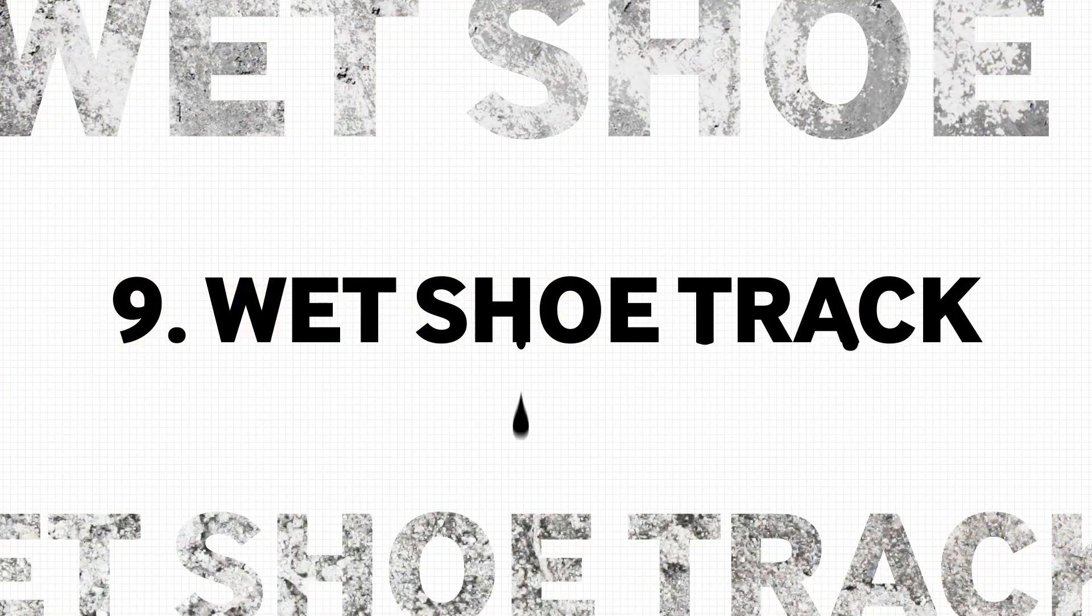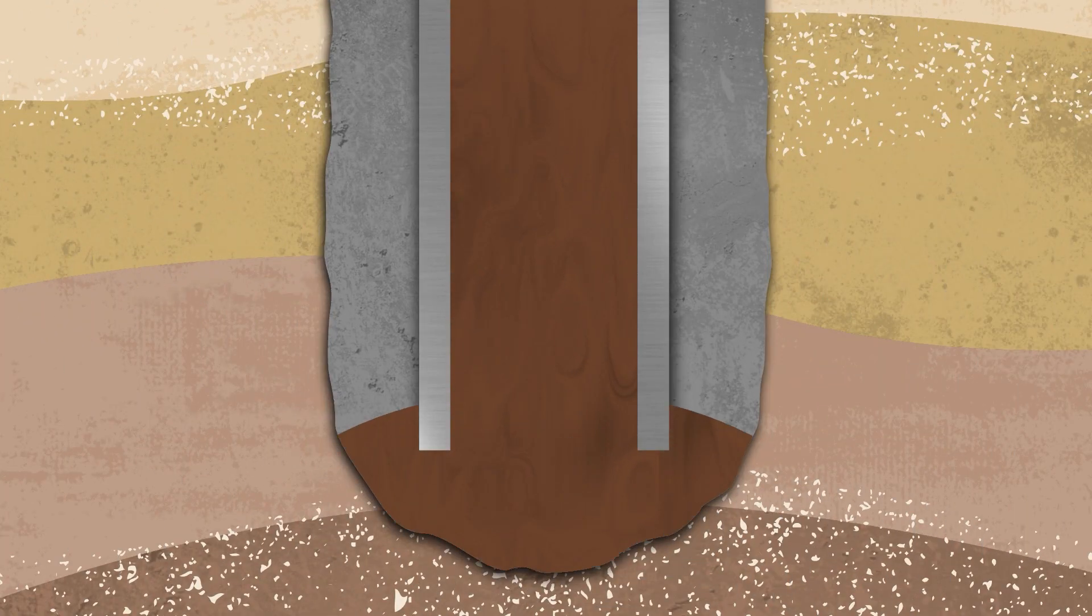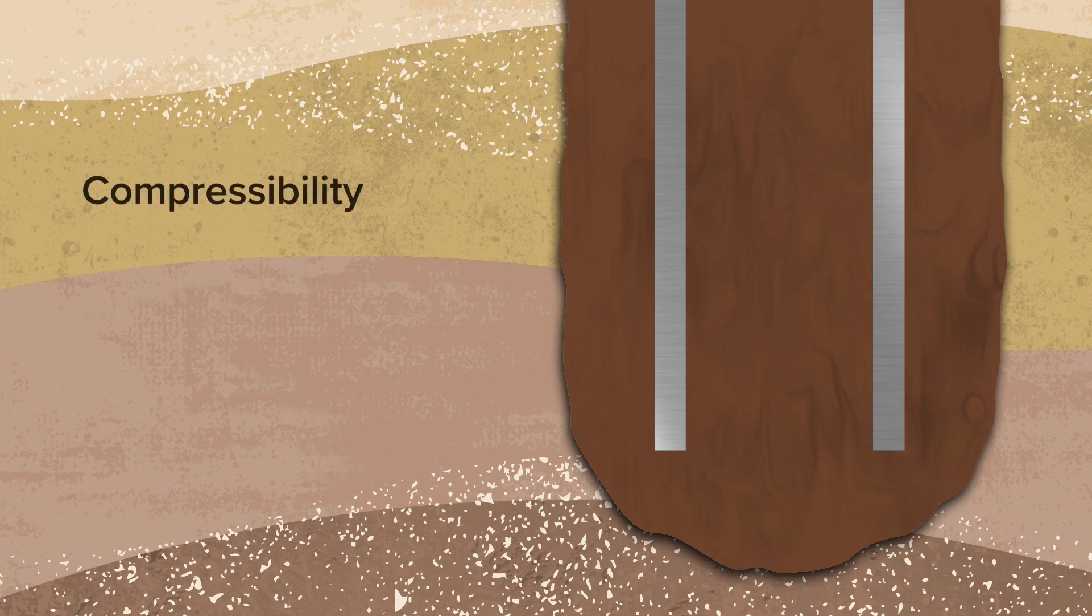A wet shoe track occurs when the displacement fluid does not stop inside the casing, entering the annulus and creating unwanted communication paths. The primary method of preventing a wet shoe is to ensure that all the various considerations that affect the displacement volume are carefully calculated.